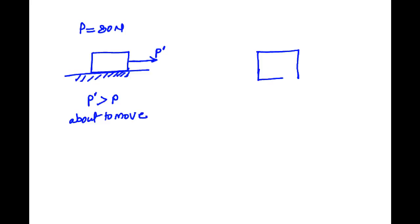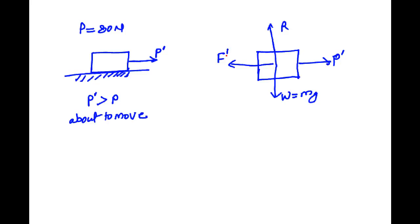The free body diagram for this condition shows force P dash, weight W equal to mg, normal component R, and horizontal component F dash. As I told you, with the increase of P, the value of F also increases. So since P dash equals 80 N, the value of F dash will be greater than F. This is the equilibrium condition when the body is just about to move.